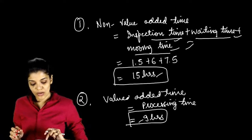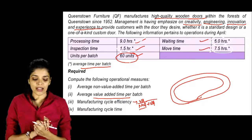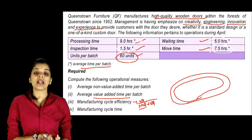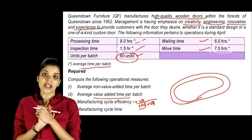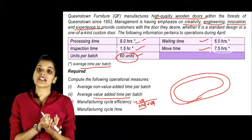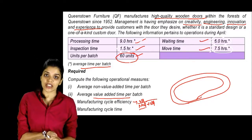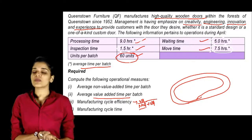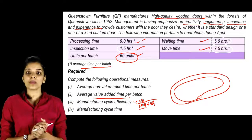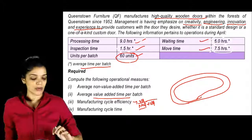So we have calculated and explained all four things: value added time, non-value added time, manufacturing cycle efficiency, and manufacturing cycle time. If there is no doubt, please feel free to ask us. Bye bye.